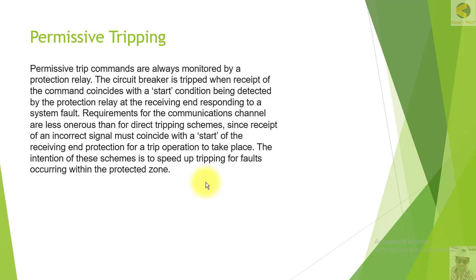The delay will be within 100 milliseconds, but on the other hand it has a double check — the communication permissive signal is received and also the relay is picked up. This double-check mechanism is the key advantage of the permissive scheme and permissive tripping.